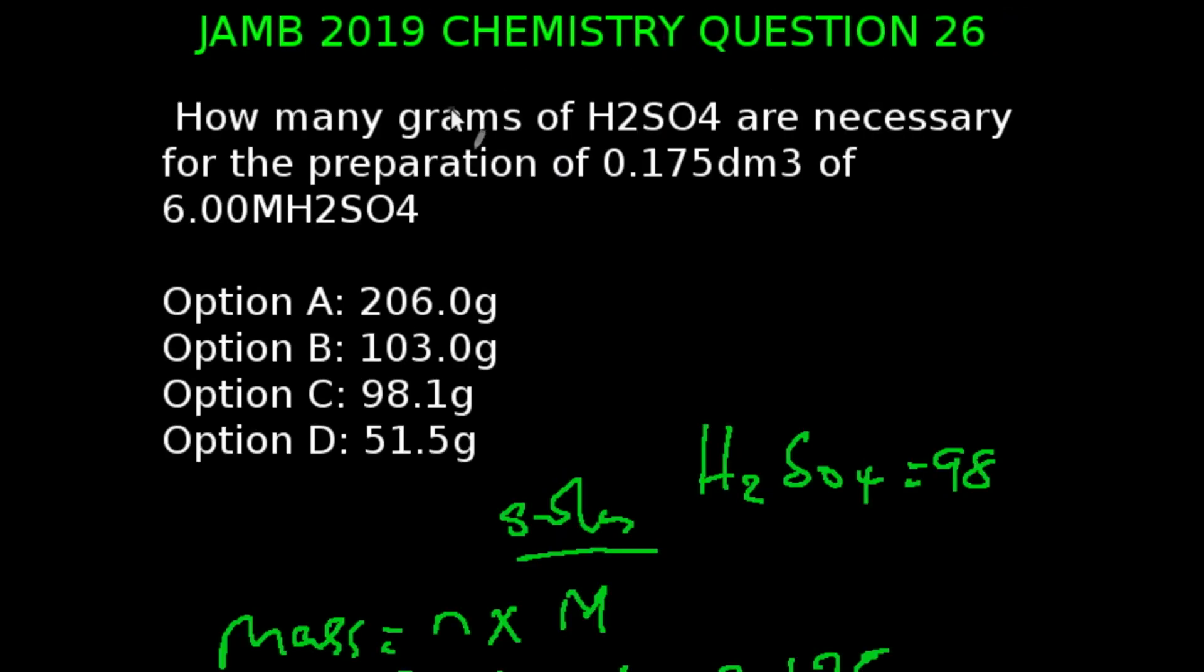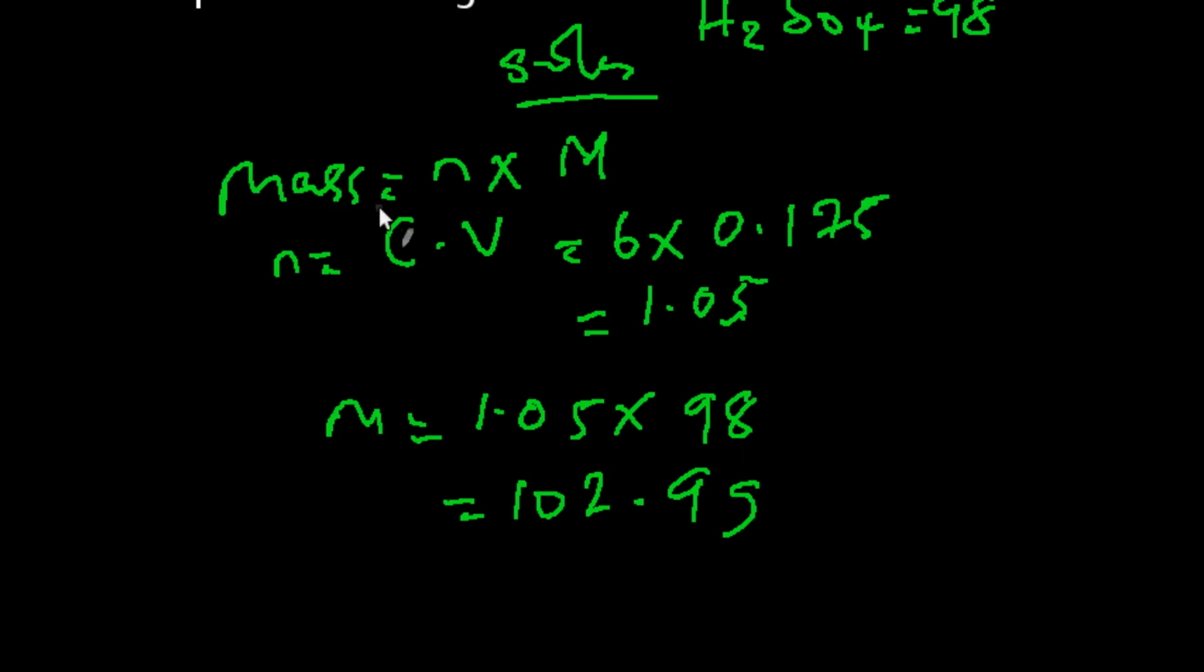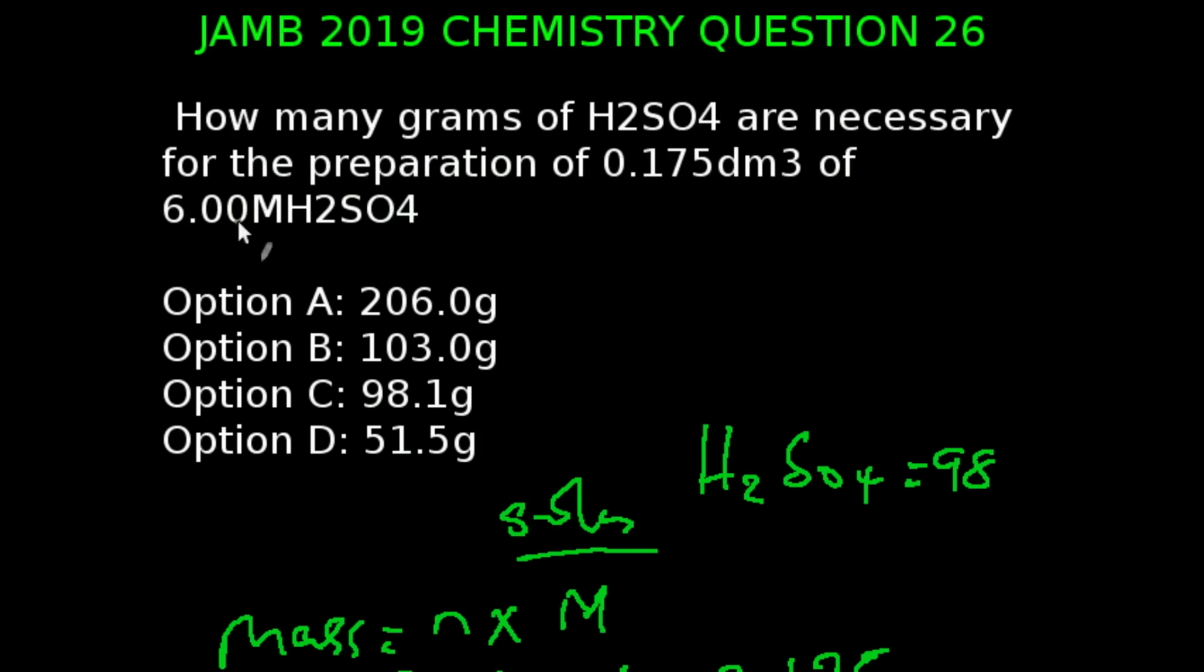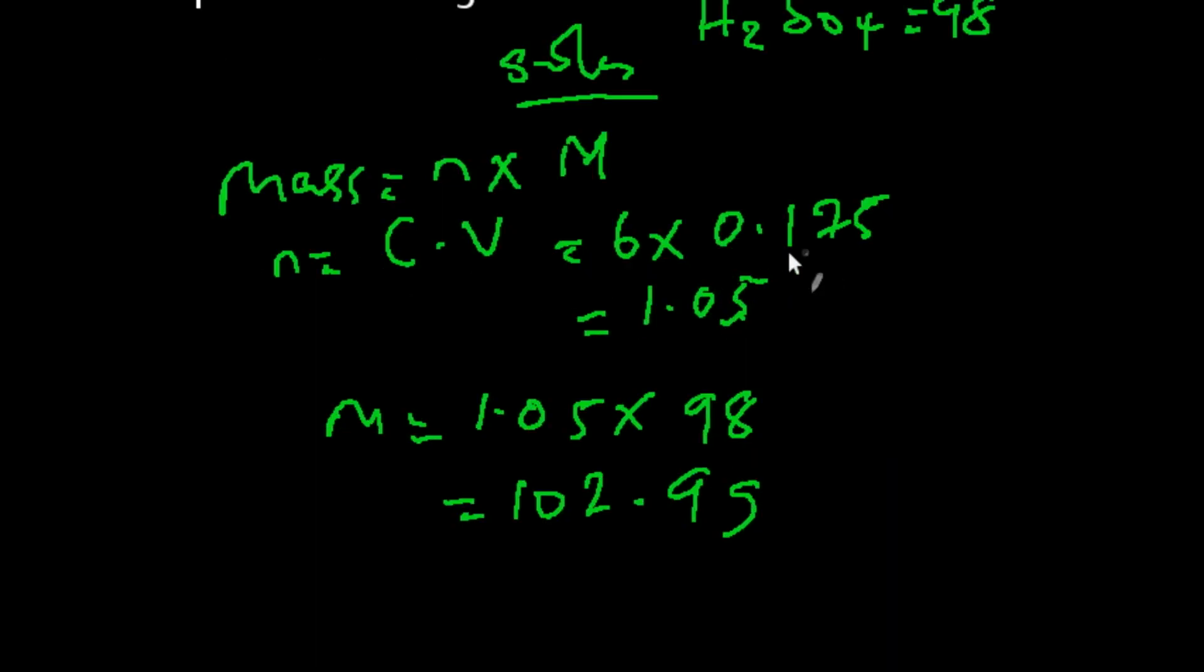Question 26 of JAMB 2019 Chemistry Examination. How many grams of H₂SO₄ are necessary for the preparation of 0.175 dm³ of 6 molar H₂SO₄? H₂SO₄ stands for tetraoxosulphate-6 acid and the molar mass is 98. We are asked to calculate mass, and mass is number of moles times molar mass. And the number of moles is concentration times volume. We're going to be having 6, which is our concentration here, multiplied by 0.175, which is the volume.